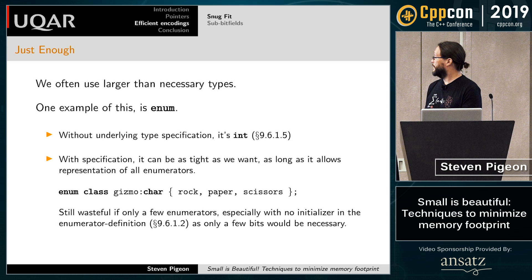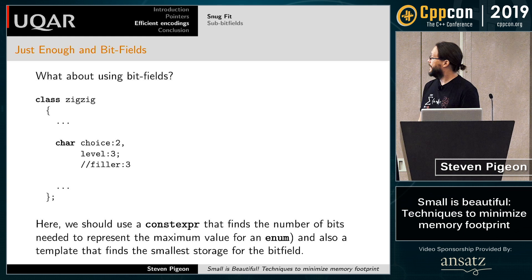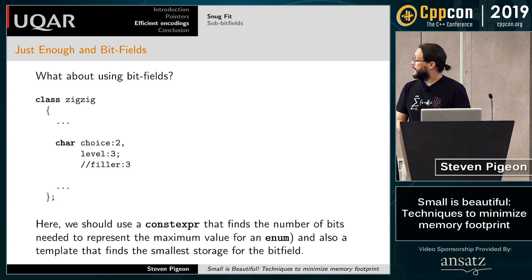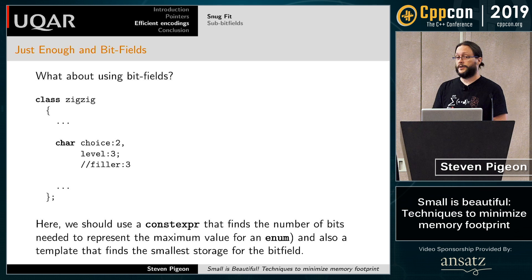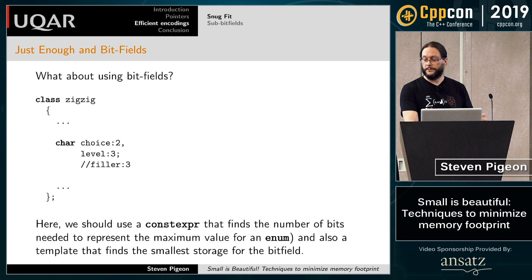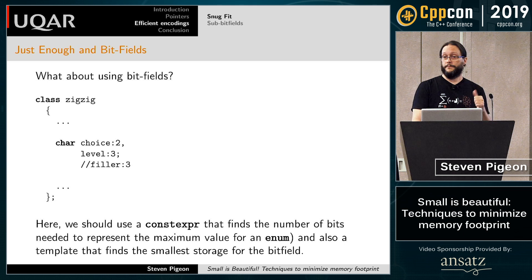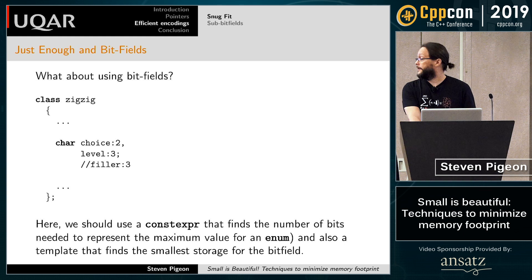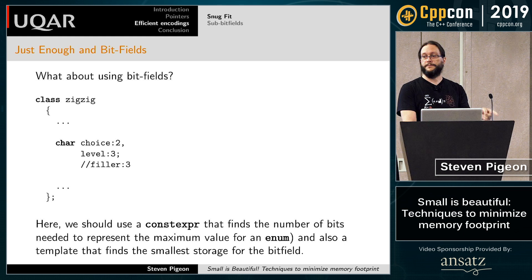One option is to use a bit field and cram all inputs together, but that version isn't very safe — it knows nothing about the number of values, and I'm not sure the alignment choice is optimal. What I should have is a constexpr function or template that tells me: if I want to represent a maximum value of X, how many bits do I need? If the maximum value I want to store is 3, I only need two bits. I also need something type-safe that says: given these bit fields, what is the smallest integer type that will hold all of them?